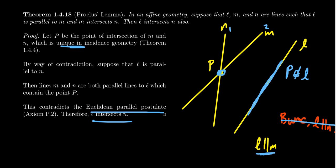Uniqueness of intersection is a theorem of incidence geometry, but it's superfluous here. All that matters is the Euclidean parallel postulate. If the assumptions of Proclus Lemma were satisfied but the conclusion was not, we would have multiple parallel lines, in violation of the Euclidean parallel postulate. This is a theorem for any affine geometry — it needs only the Euclidean parallel postulate, which Young's geometry and four-point geometry both satisfy.